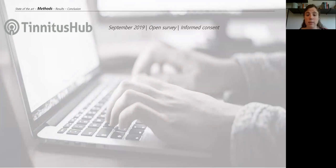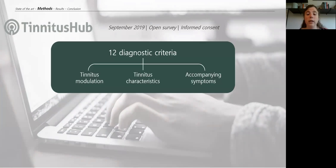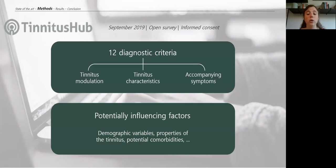The survey was launched in September 2019 as an open survey and patients gave their informed consent to use their anonymized data. We included questions on 12 out of those 16 diagnostic criteria I discussed earlier. Just for your information, the remaining four criteria are based on certain manipulations or maneuvers, so could not be included in an online survey. And then a whole list of questions on potentially influencing factors such as demographic variables, but also properties of a tinnitus itself or potential comorbidities. All in all, our survey included 42 questions in total.